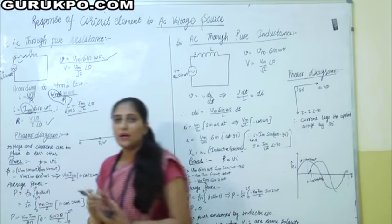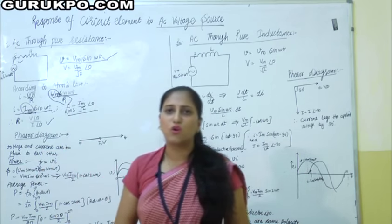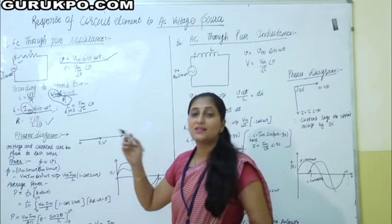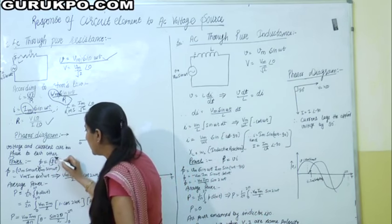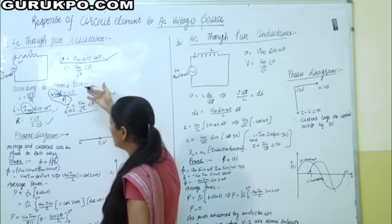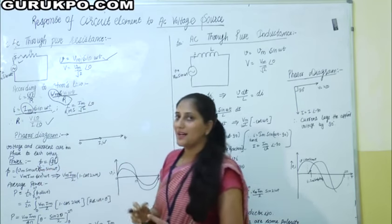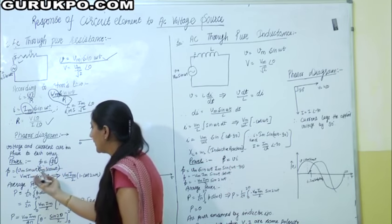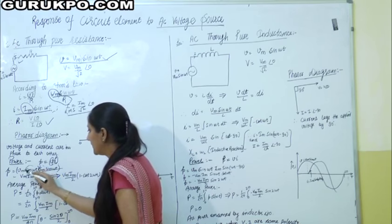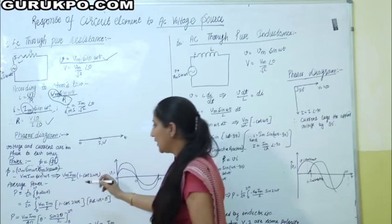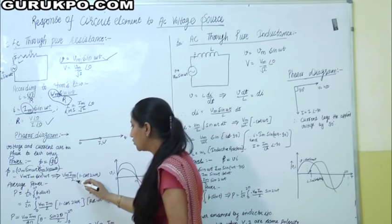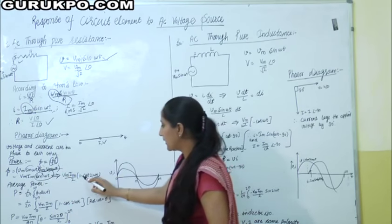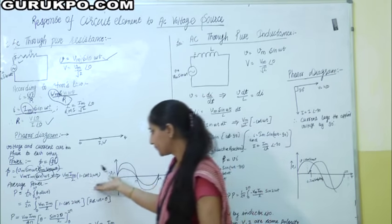Now about power. We know that power equals voltage multiplied by current: P = V × I. This is our instantaneous power. Putting V = Vm sin(ωt) and I = Im sin(ωt), and multiplying both values, we get Vm × Im × sin²(ωt). Using the identity sin²(ωt) = (1 − cos 2ωt) / 2, this becomes P = (Vm × Im / 2)(1 − cos 2ωt).